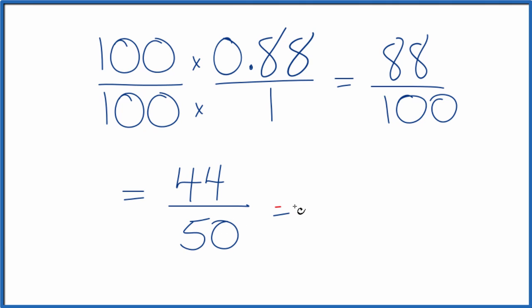These are both even numbers, so I can reduce it further. If I divide 44 by 2, I get 22. If I divide 50 by 2, I get 25. I can't reduce or simplify this any further.